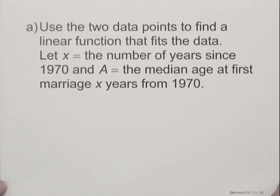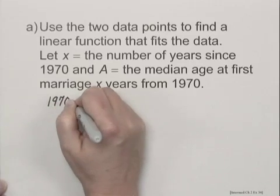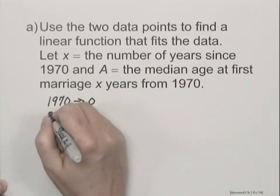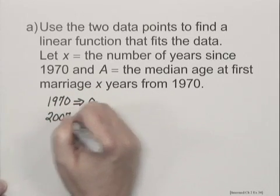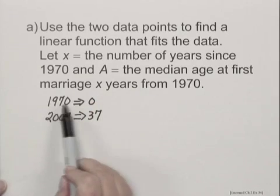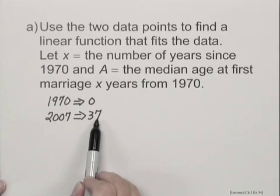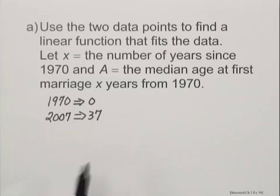Now when x equals the number of years since 1970, 1970 will correspond to 0 and 2007 will correspond to 37. So instead of 1970 we use 0, instead of 2007 we use 37. This is commonly done just so we aren't working with as large numbers.